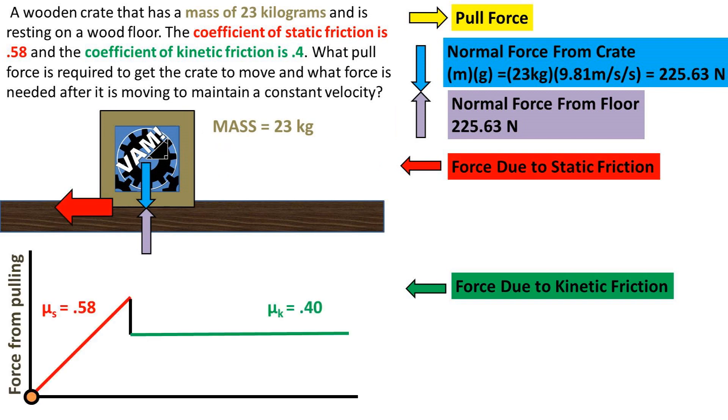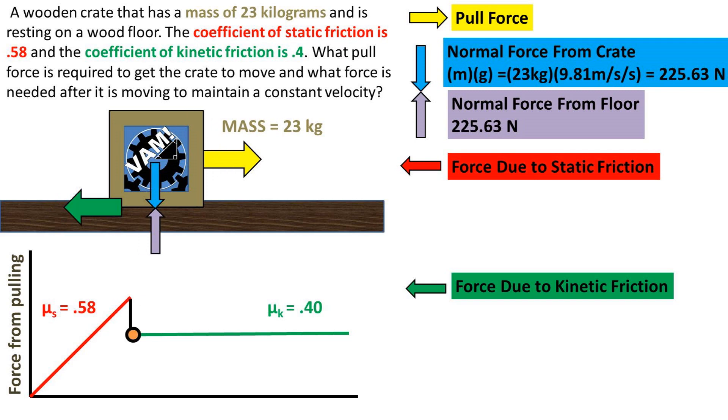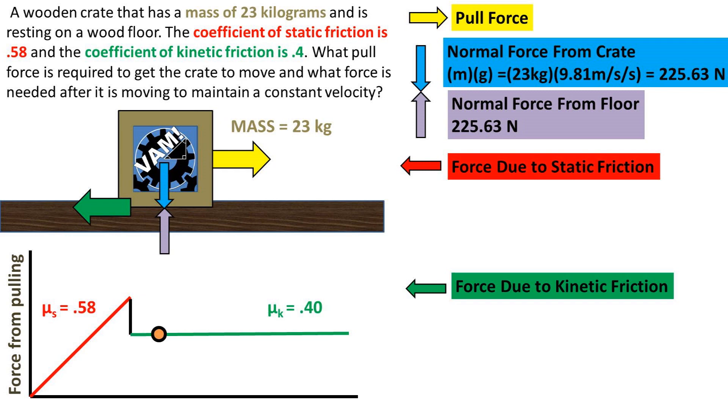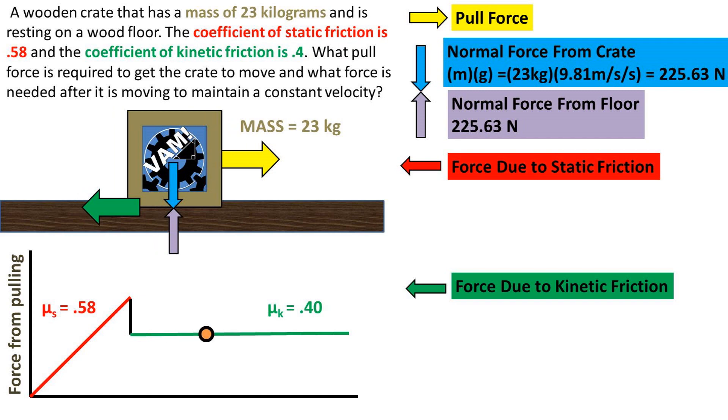On the bottom of the slide, I have a graph that shows what happens as you increase the force from pulling. At first, the force increases up until the point where you hit the max static frictional force. After we surpass that force, the crate begins to move and now we are working against the coefficient of kinetic friction force. In most cases, the kinetic friction force is less than the static friction force. Of course, there are exceptions.